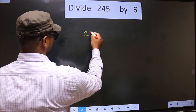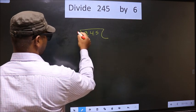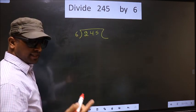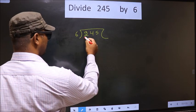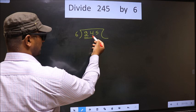That is 245, 6 here. Now, here we have 2, 2 smaller than 6. So, we take 2 numbers that is 24.